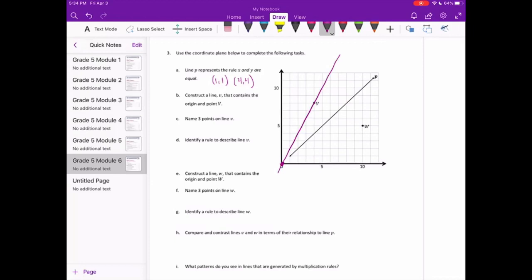Name 3 points on line V. So let's not use 0, 0. Let's, how about that? That is 1, 2. And this one would be 3, 6. And let's use V. V is 4, 8.